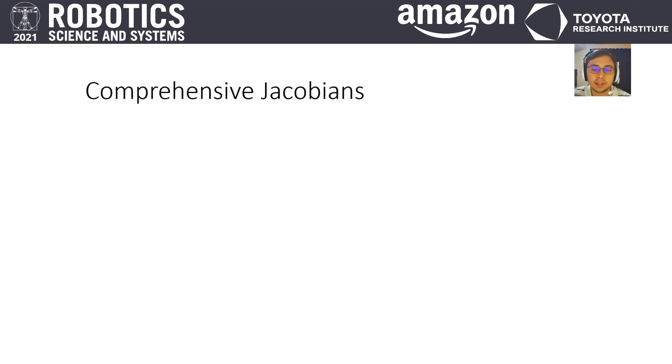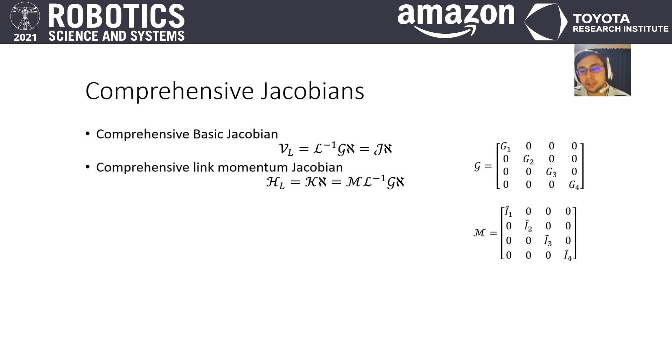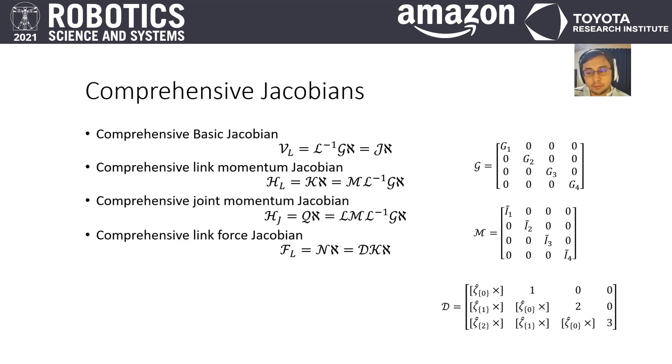We can now define all comprehensive Jacobians. The comprehensive basic Jacobian maps the comprehensive motion vector Aleph to the comprehensive link motion VL, and Aleph represents motion of all joints. Then we get the comprehensive link momentum Jacobian where the matrix M is a block diagonal matrix composed of inertia matrices. The comprehensive joint motion Jacobian, the comprehensive link force Jacobian where matrix D is a mapping matrix from momentum to force, and the comprehensive joint force Jacobian to finally get the comprehensive torque Jacobian.